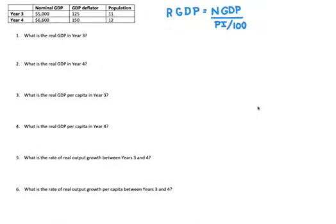Okay, in this video, we're going to calculate real GDP given the GDP deflator and nominal GDP. We're going to calculate real GDP per capita. And then finally, we're going to calculate the real output growth rate between these years and the real output growth rate per capita between these years. So let's start with the first one.